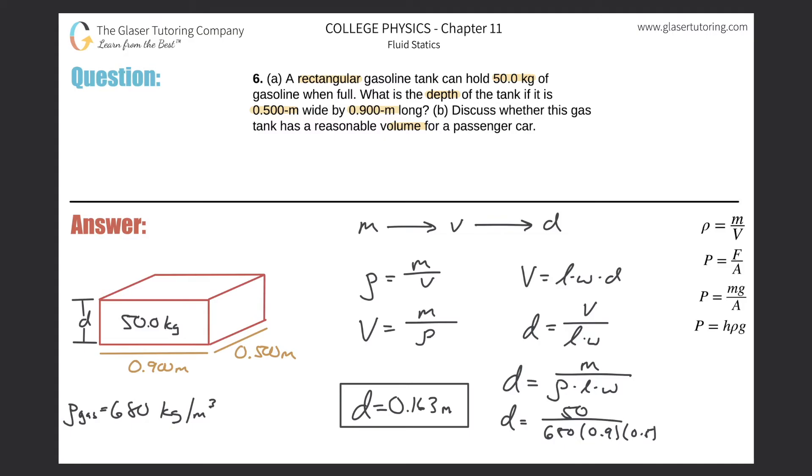So why don't we just find out what that volume is? For letter B, the volume was equal to the mass, which is 50, over 680. This is in cubic meters, so this is about 0.0735 cubic meters.